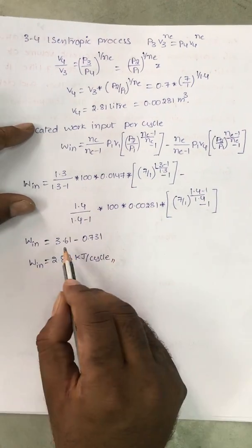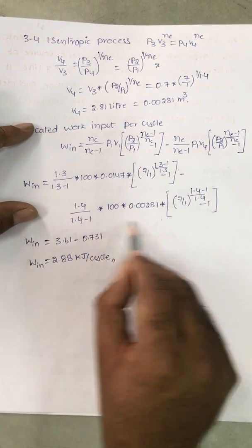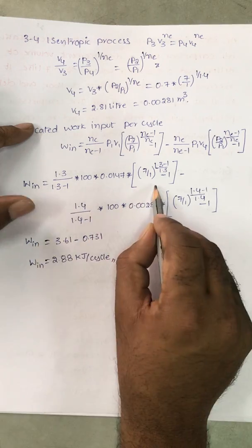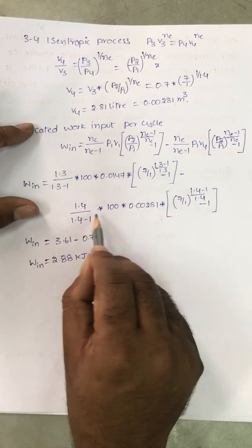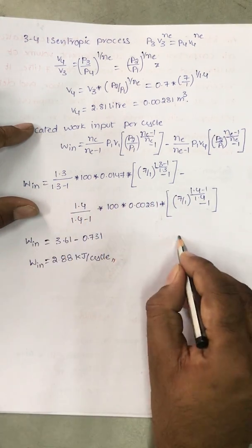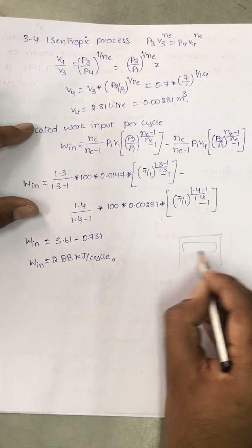So if you calculate all this, you will get 3.6 minus 0.731. This value is more because this is compression effect. This is expansion effect. Expansion of the air which is in the clearance volume. Small volume.